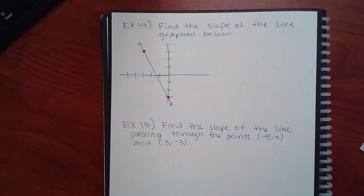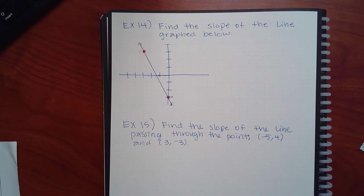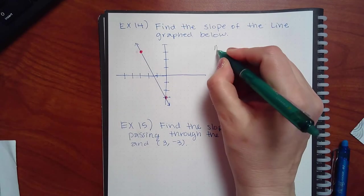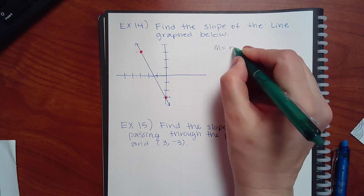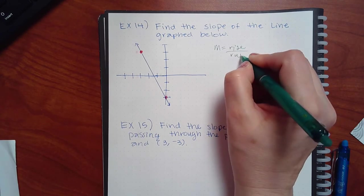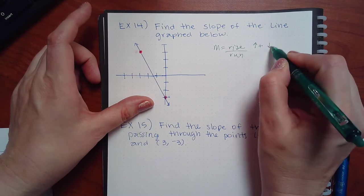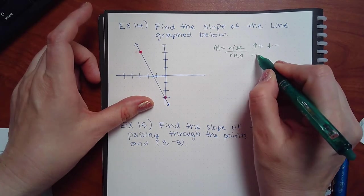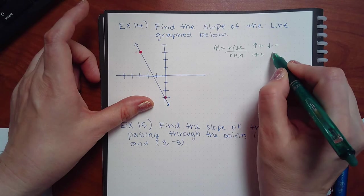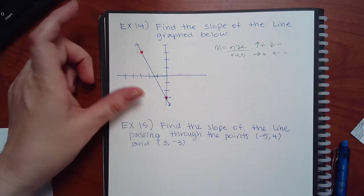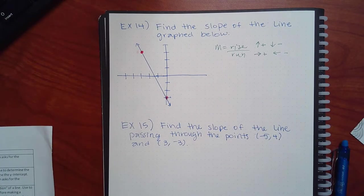This problem says to find the slope of the line graphed below. We need to remember that m is rise over run. If you go up it's positive, if you go down it's negative. If you go to the right it's positive, if you go to the left it's negative.